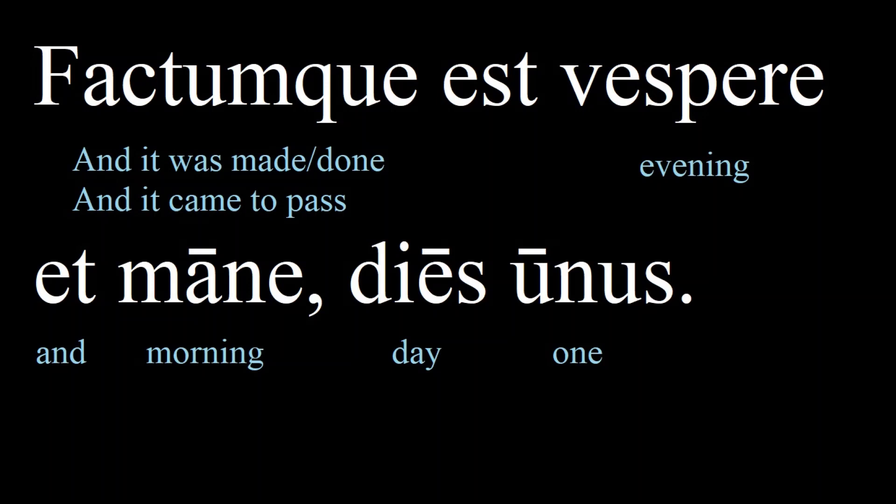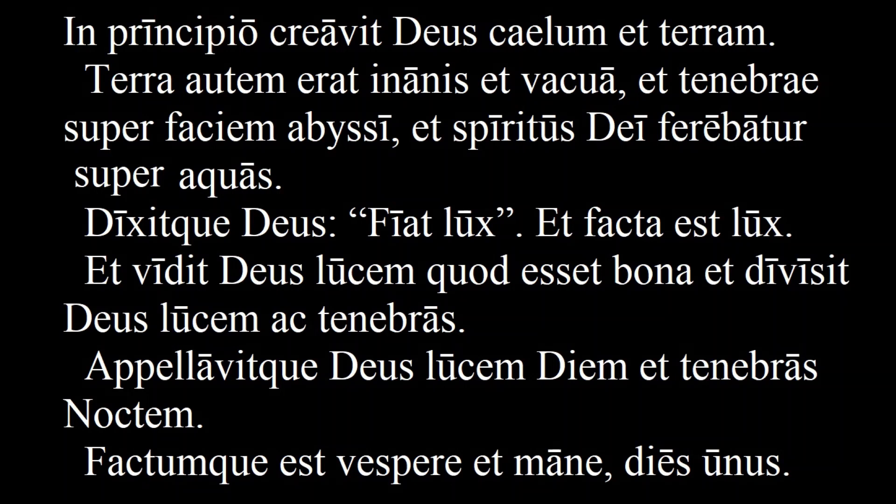Let's go through this passage one more time, all the way through. In principio creavit Deus caelum et terram. Terra autem erat inanis et vacua, et tenebrae super faciem abyssi, et spiritus Dei ferebatur super aquas. Dixitque Deus: fiat lux, et facta est lux. Et vidit Deus lucem, quod esset bona, et divisit Deus lucem ac tenebras. Appellavitque Deus lucem diem, et tenebras noctem. Factumque est, vespere et mane, dies unus.